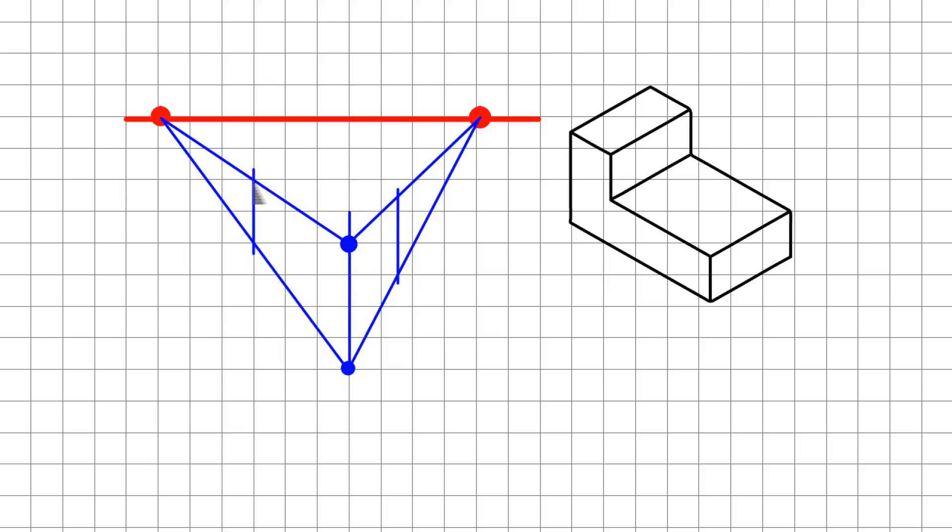From there I'm going to bring my lines across. Anytime you have this vertical line here, any line that's to the left of it is going to get brought back to the right vanishing point. Any line that's to the right of the vertical line will get brought back to the left vanishing point.